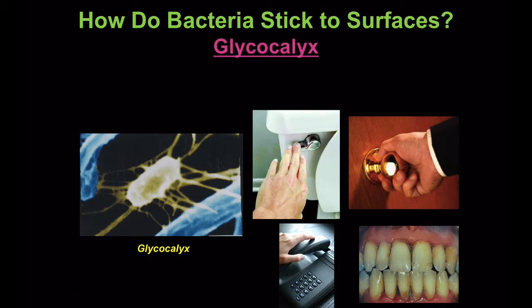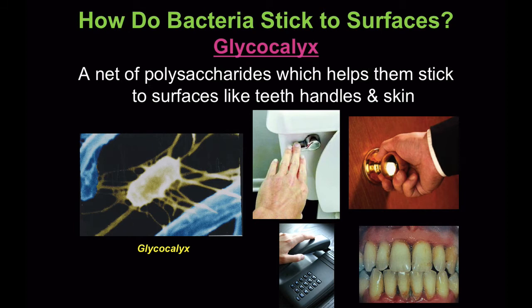So how do bacteria stick to surfaces? It's a net of polysaccharides, which can help them stick to surfaces like teeth, handles, and skin.